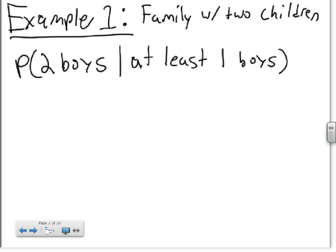The sample space for this, meaning all the possible options for two children, would be having either two boys, a boy then a girl, a girl then a boy, or two girls.